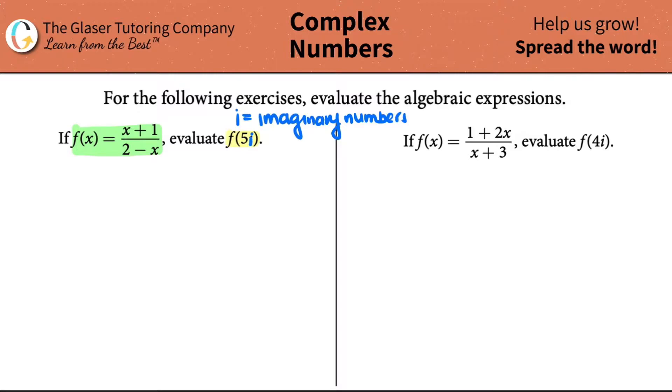So let's solve for the first one. They gave us a function f of x equals x plus 1 all over 2 minus x. All we have to do is substitute all of the x values for what they tell us. In this case, they want us to substitute all of the x values for 5i's. Here's an x value, and here's an x value. So instead of writing it as x, I'm just going to pop in a 5i right there.